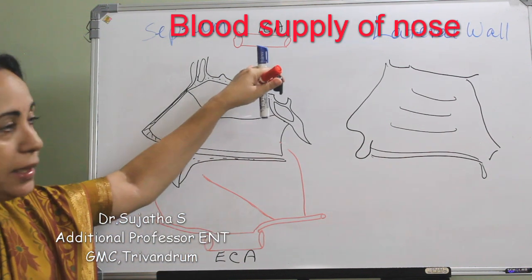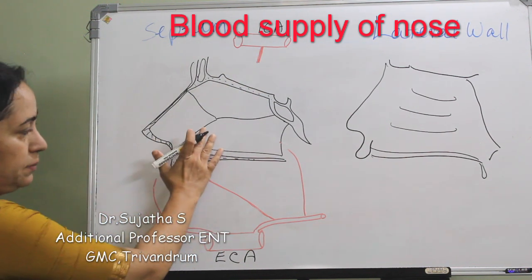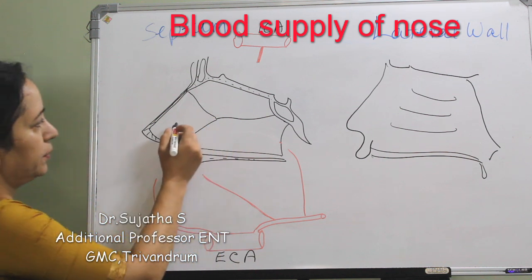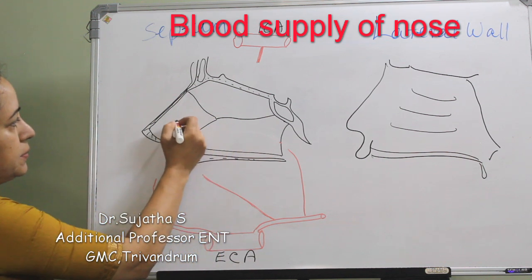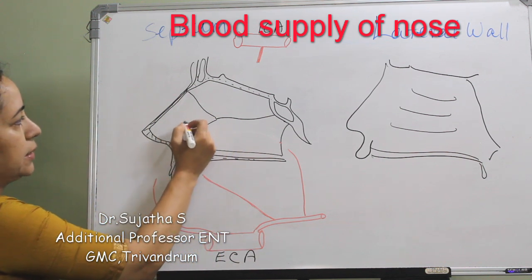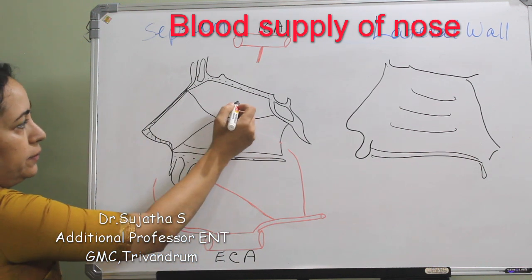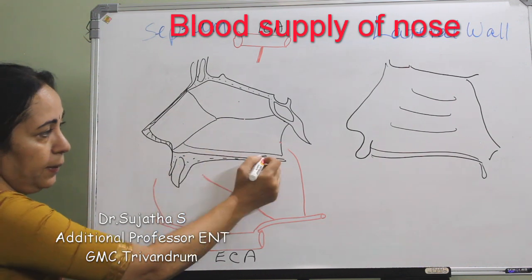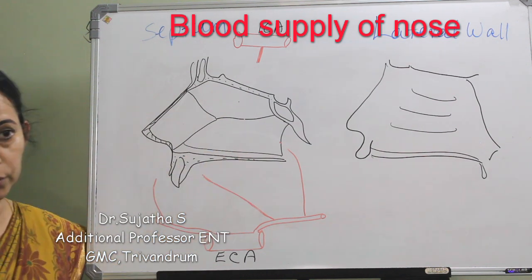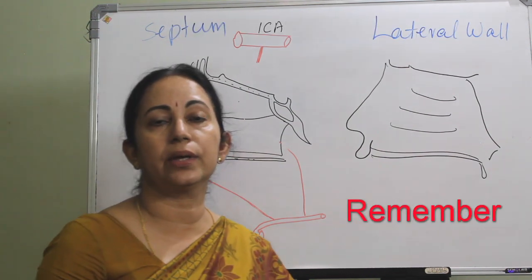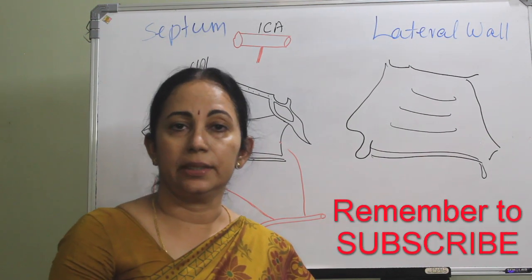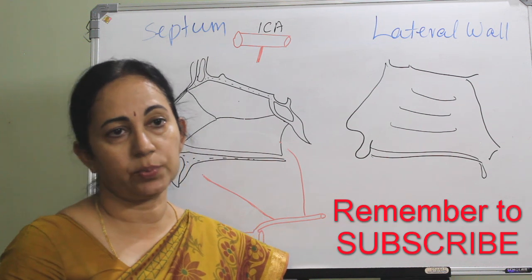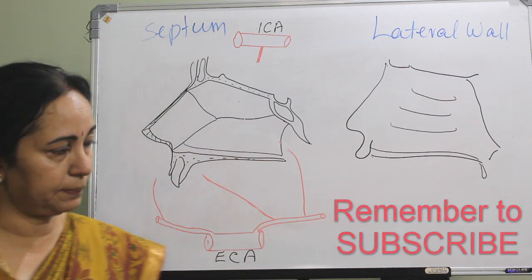So from the internal — this is septum and this is the lateral wall of nose. Anatomy of septum: here comes the cartilage, the perpendicular plate of ethmoid, vomer, and the palatine bone. The lateral wall has the three turbinates and also the corresponding meatus.